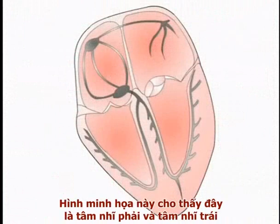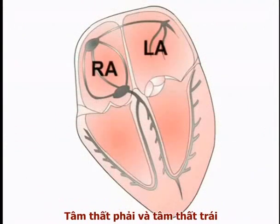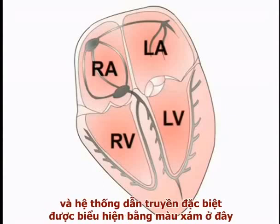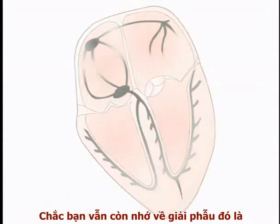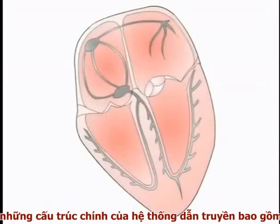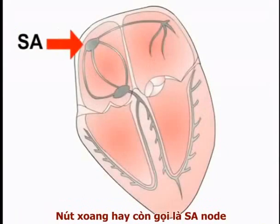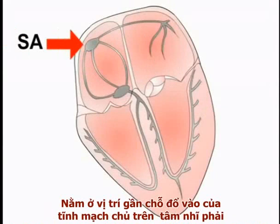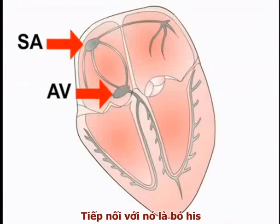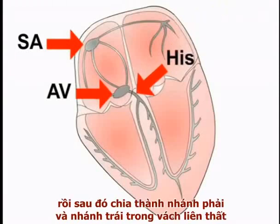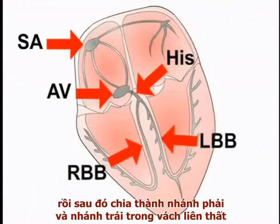The schematic shows the right and left atria, the right and left ventricles, and the specialized cardiac conducting system seen here in gray. The main components of the conducting system are the sinoatrial or SA node, situated near the entry of the superior vena cava into the right atrium, and the atrioventricular or AV node, leading into the bundle of His, which then divides into the right and left bundle branches in the interventricular septum.